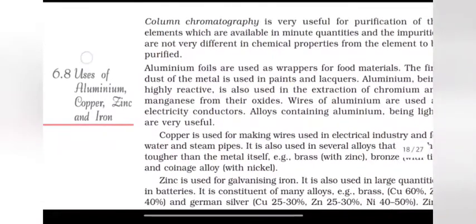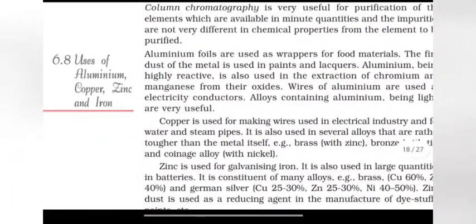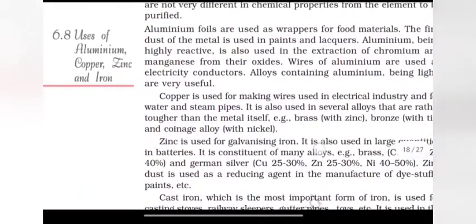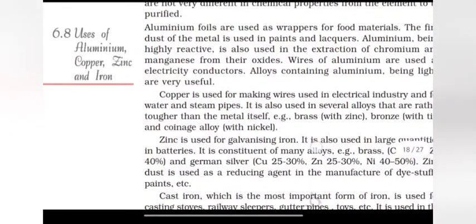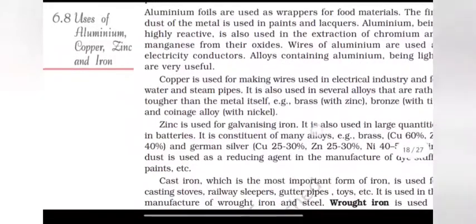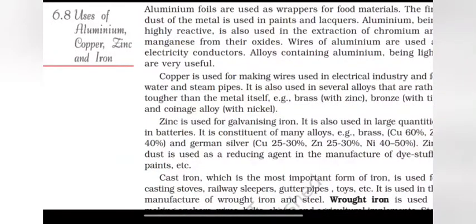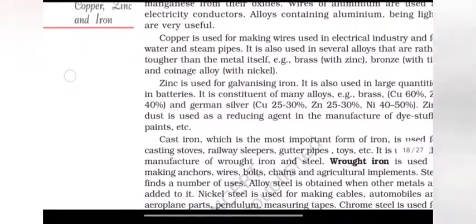Uses of aluminum, copper and zinc and iron. Aluminum foils are used as wrapper for food materials. The fine dust of metal is used in paints and lacquers. Aluminum being highly reactive is also used in extraction of chromium and manganese from their oxides. Wires of aluminum are used as electricity conductors. Alloys containing aluminum being light are very useful.